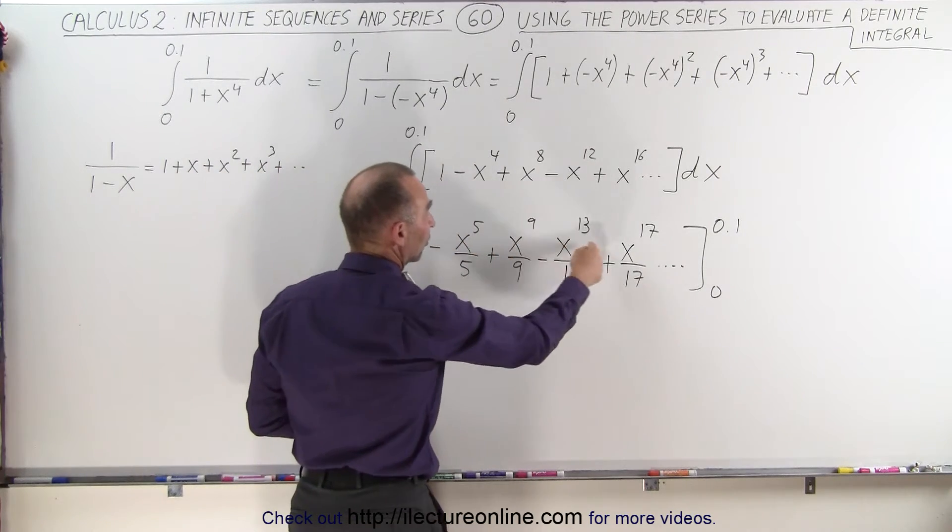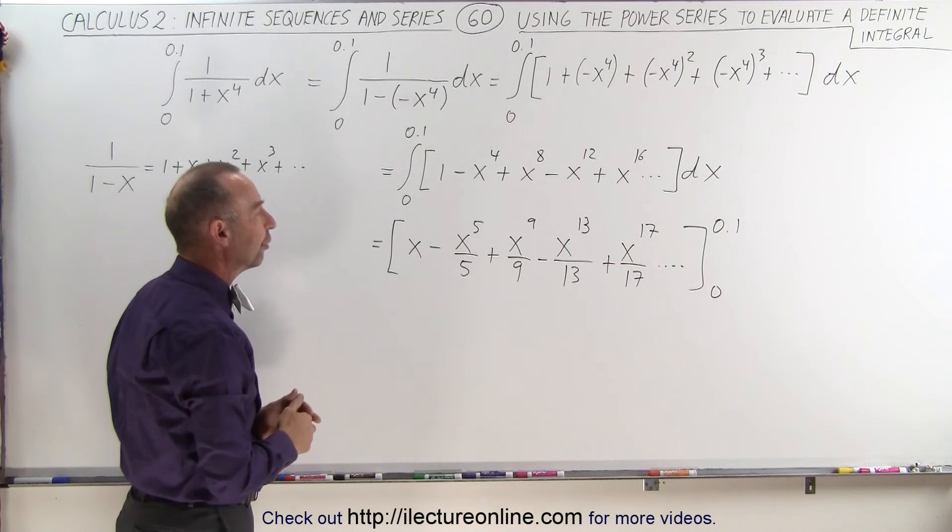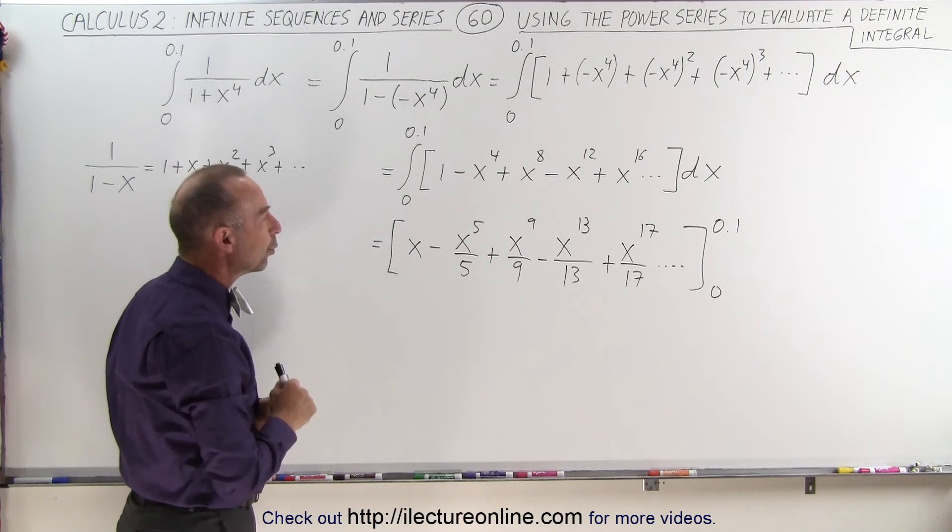If x is larger than 1, of course when we have very large exponents like this, that number becomes very very big and it will not converge. But for values less than 1, it will converge.